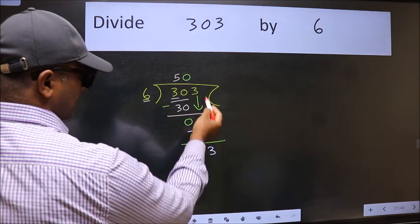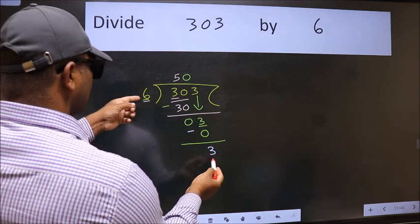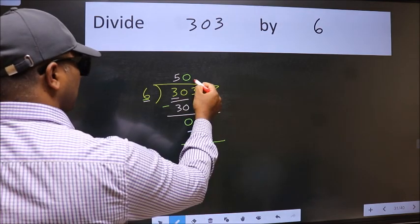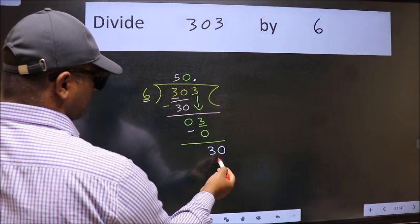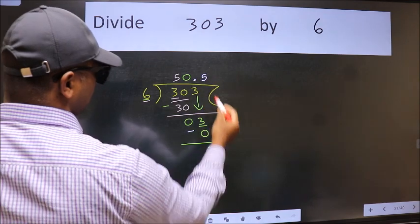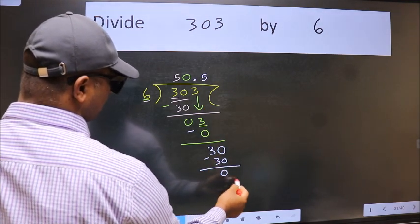Over here, we did not bring any number down, and 3 is smaller than 6, so now we can put a dot and take 0. So 30. When do we get 30 in 6 table? 6 times 5 is 30. Now we subtract. We get 0.